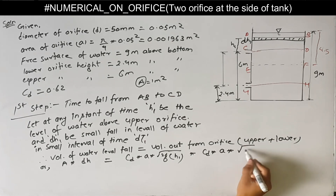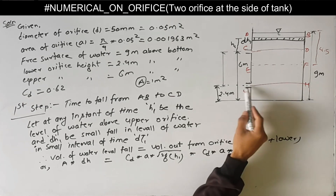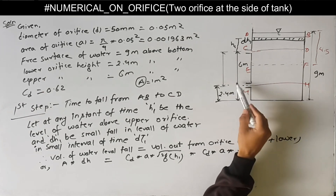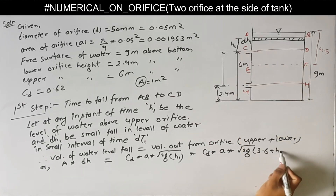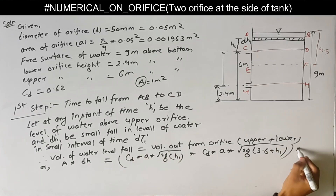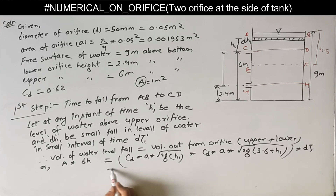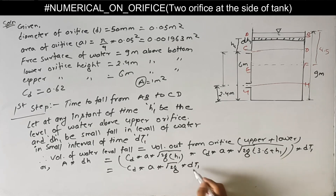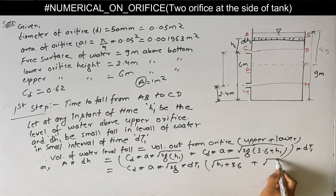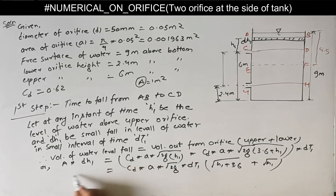This must be equal to discharge from the upper orifice plus discharge from the lower orifice. Discharge from the upper orifice is Cd into small a into root(2g) into root(H1). Discharge from the lower orifice is Cd into small a into root(2g), and the head above the lower orifice is 6 minus 2.4, that is 3.6 plus H1. This is discharge into time dt1. We can take common Cd, area of orifice, root(2g), and dt1.